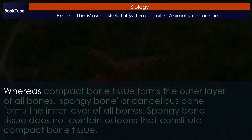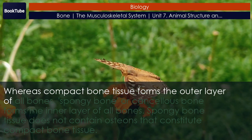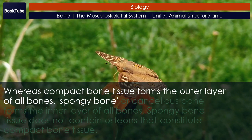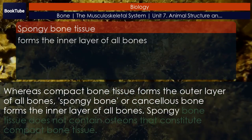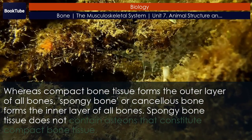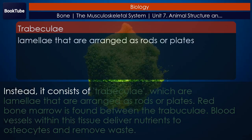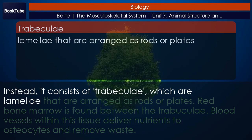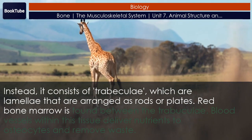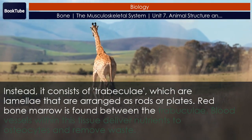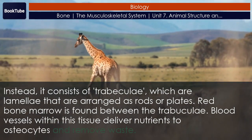Whereas compact bone tissue forms the outer layer of all bones, spongy bone, or cancellous bone, forms the inner layer of all bones. Spongy bone tissue does not contain osteons. Instead, it consists of trabeculae, which are lamellae arranged as rods or plates. Red bone marrow is found between the trabeculae. Blood vessels within this tissue deliver nutrients to osteocytes and remove waste.